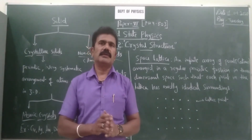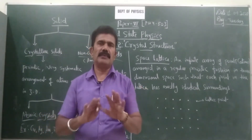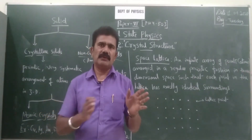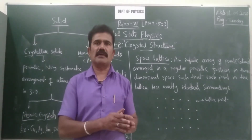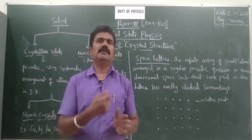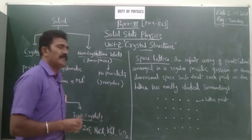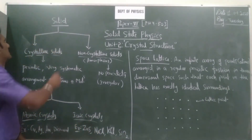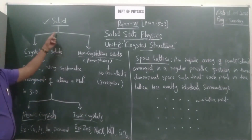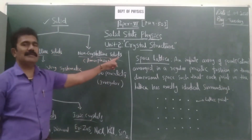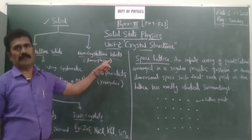In this chapter we are discussing particularly crystalline types of solids. We are not concerned with non-crystalline solids because there is a complete physical difference between the two. In this chapter we need to understand what types of solids are called crystalline solids. Solids can be classified as crystalline solids and non-crystalline solids. Non-crystalline solids are also called amorphous solids.